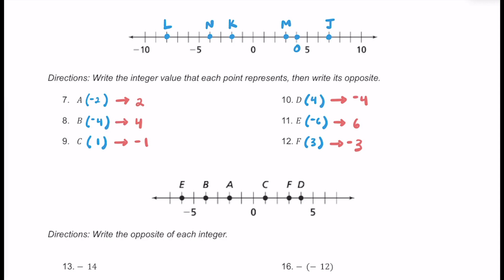So for each of these, we went ahead and found the integer value first, and then found the opposite of each of those integers — that is the number that is the same distance from 0, or equidistant from 0, as the original.